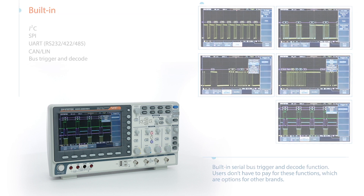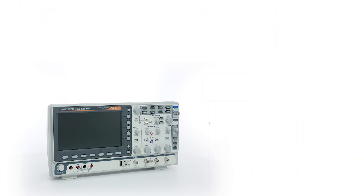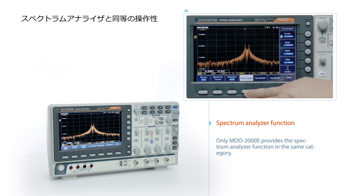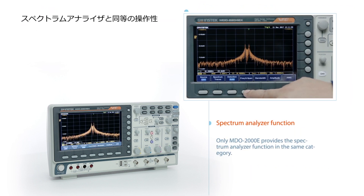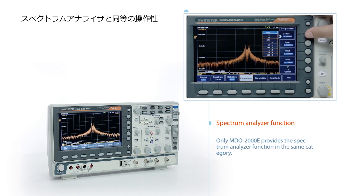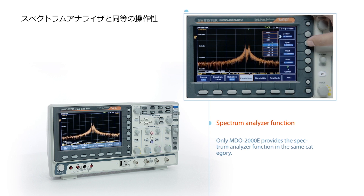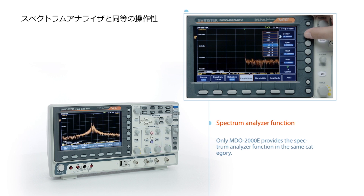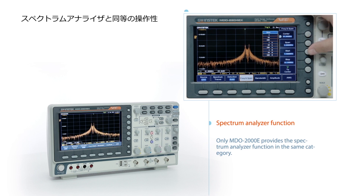Only the MDO-2000E provides the spectrum analyzer function in the same category. It allows users to set center, start, stop frequency, and span. The operation is very close to a desktop spectrum analyzer.